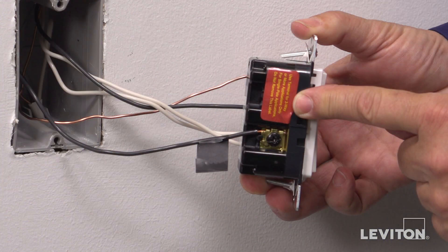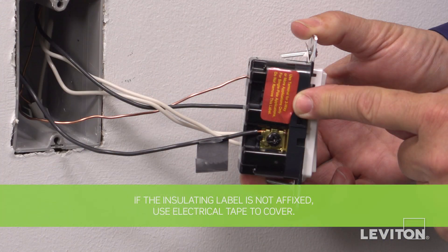Note, switch terminal screw marked YLRD should have red insulation label affixed. If insulating label is not affixed to terminal screw marked YLRD, use electrical tape to cover.